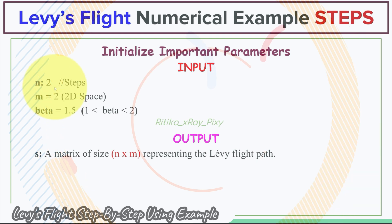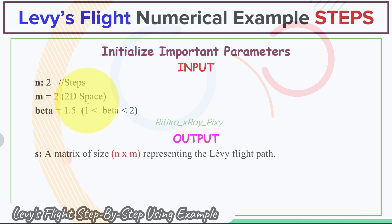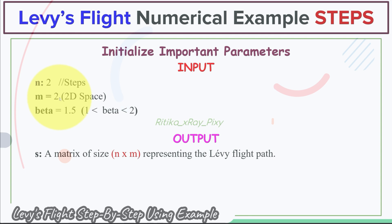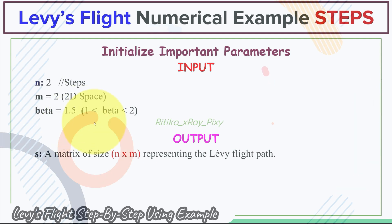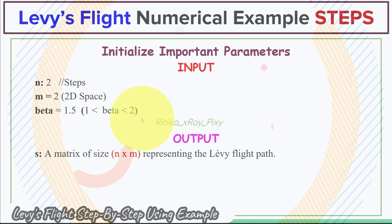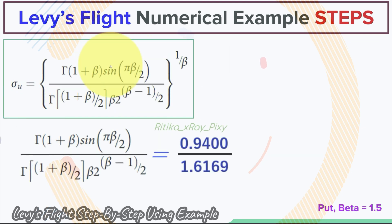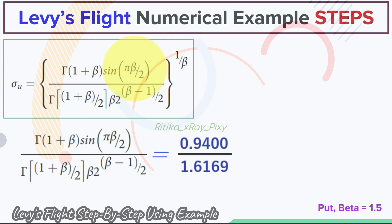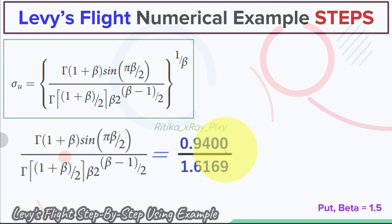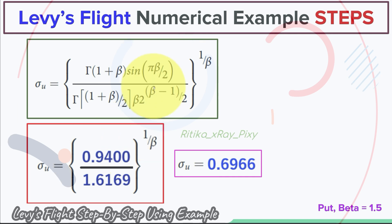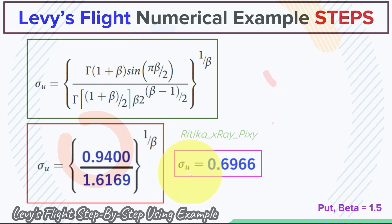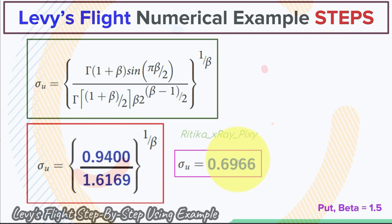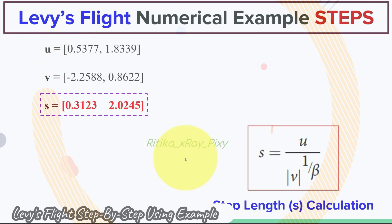The parameter values are: n equals 2 because we will calculate two steps; m equals 2 meaning we are using 2D space; and beta equals 1.5, which is between 1 and 2 as required. Putting beta equals 1.5 into the sigma_u equation gives 0.9400 divided by 1.6169, raised to the power of 1 divided by 1.5. After this calculation, the sigma_u value obtained is 0.6966.